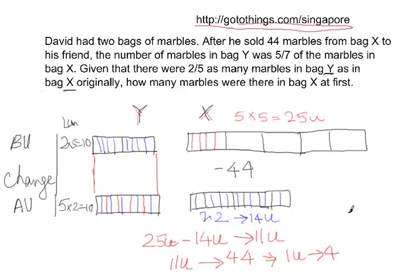So the question is how many marbles were there in bag X at first. At first, X had 25 units of marbles. So the total number of marbles at first is 25 units, which is 25 times four, which is 100 marbles.